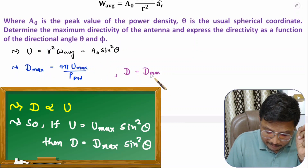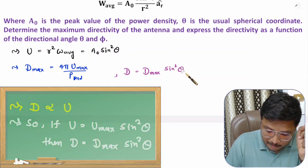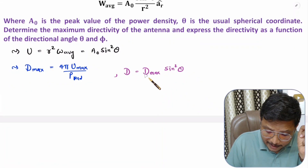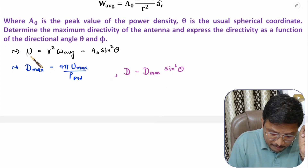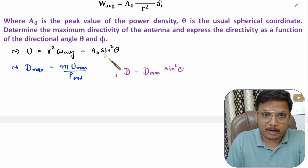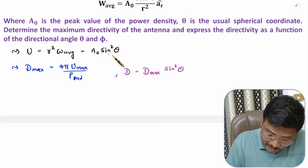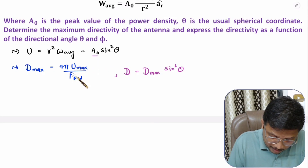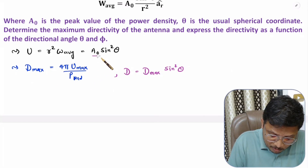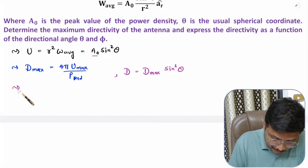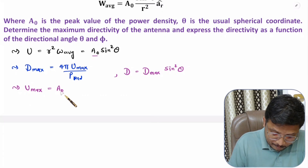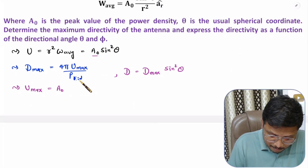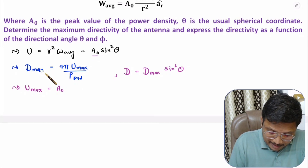So maximum directivity will be D_max multiplied by sin²θ. Here, observing the function, the maximum radiation intensity is A₀, so u_max is A₀. Now we need to identify radiated power so that we can compute maximum directivity.